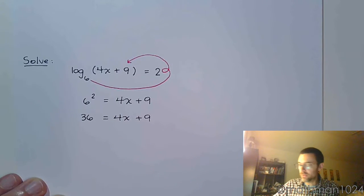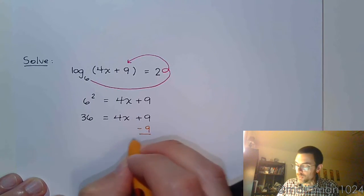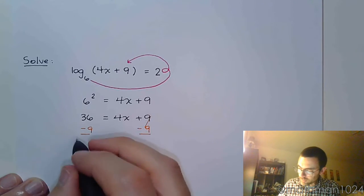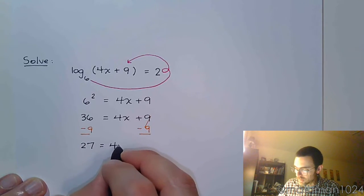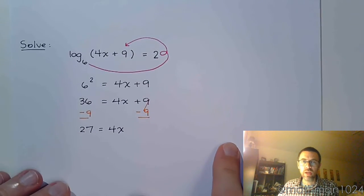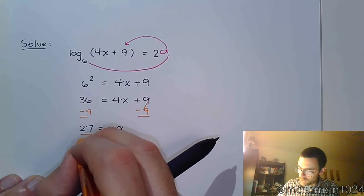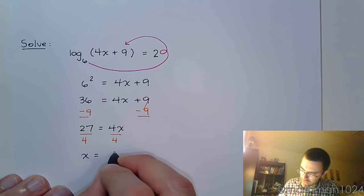And then we'll just solve this linear equation. So we subtract 9 on both sides. We get 27 is equal to 4x. And then we finish this by dividing both sides by 4. So x is 27 over 4.